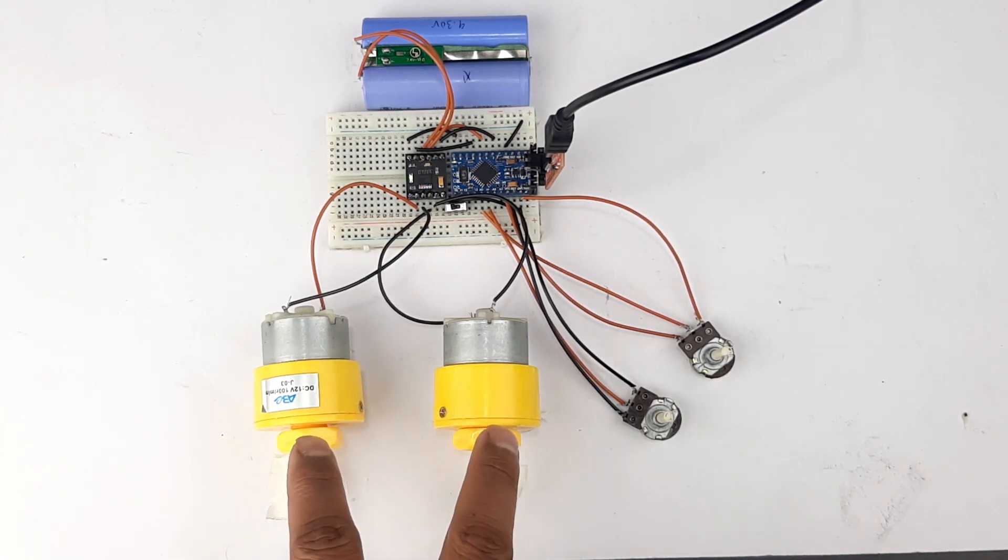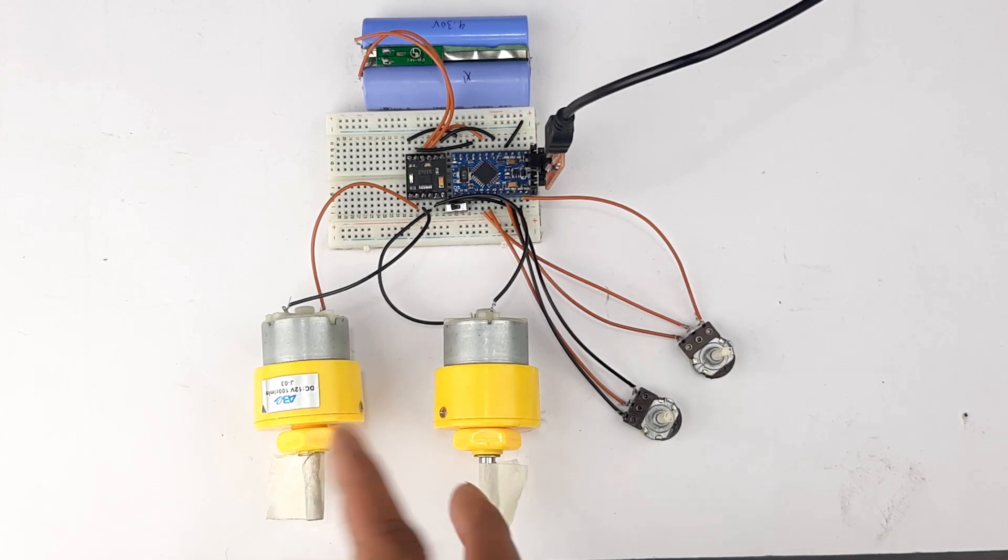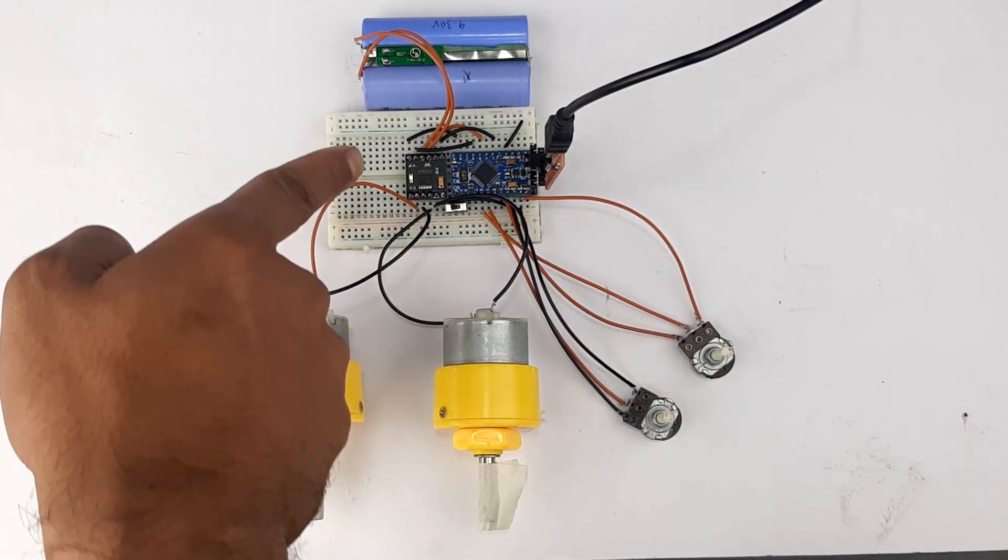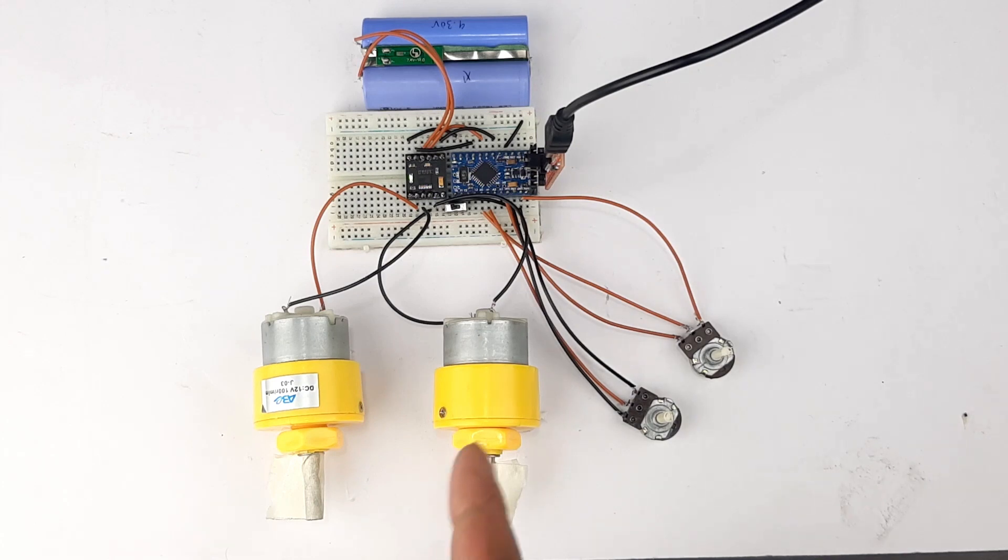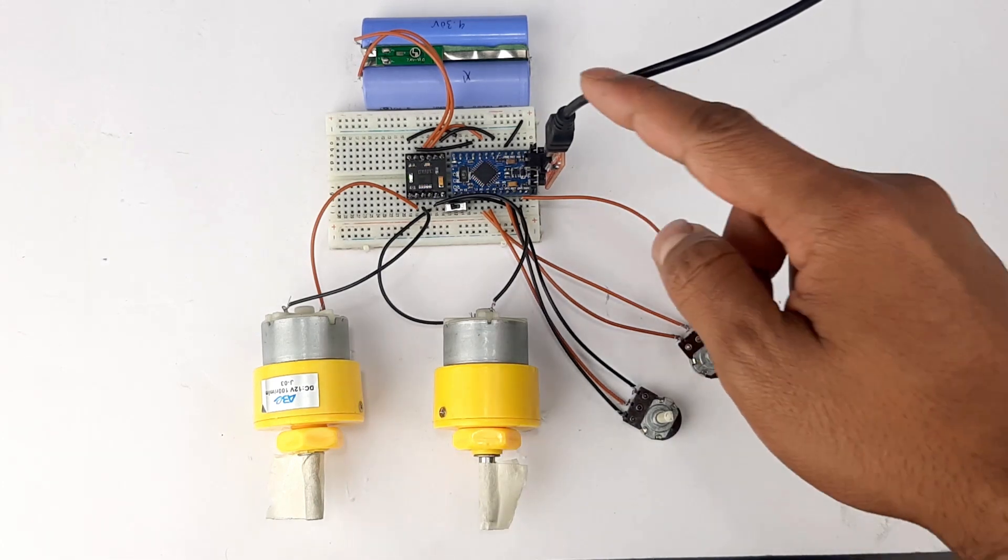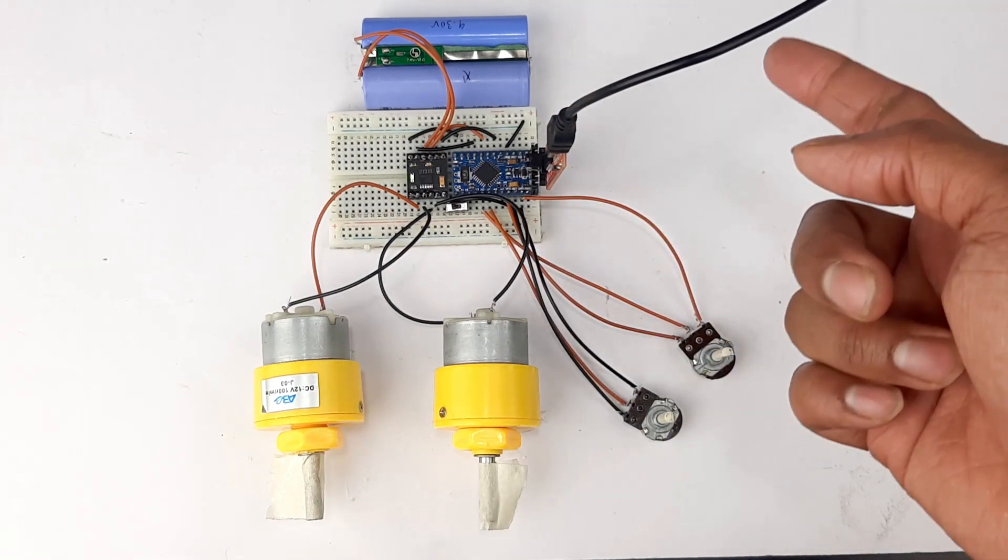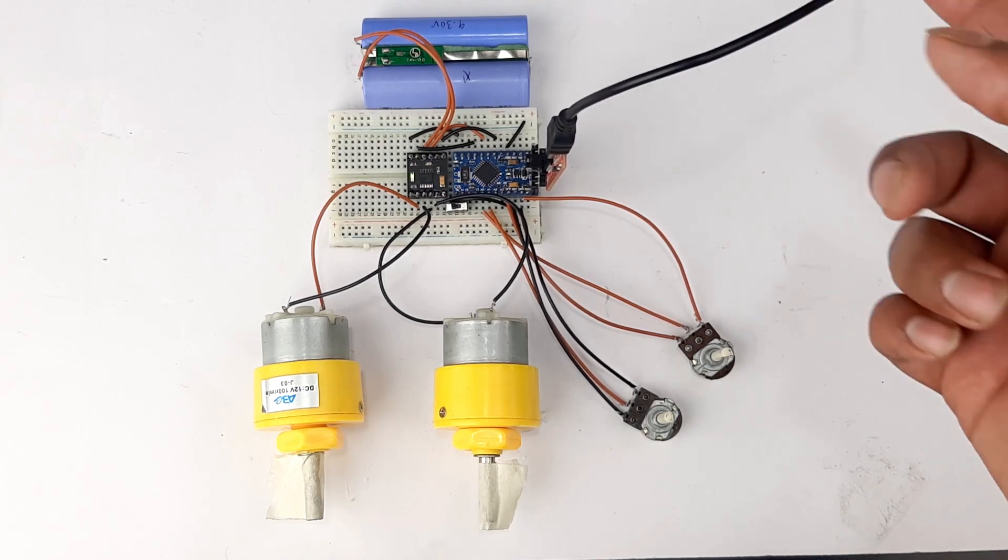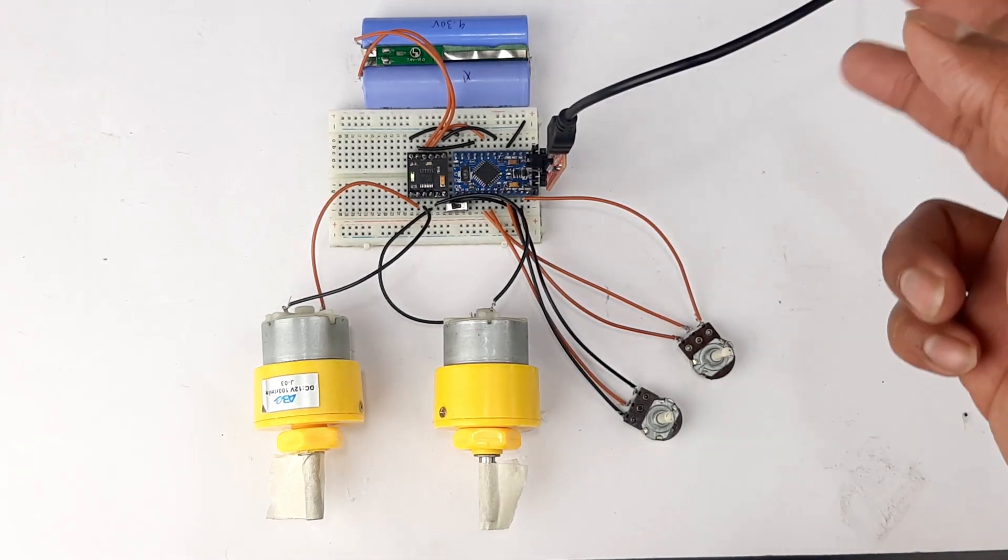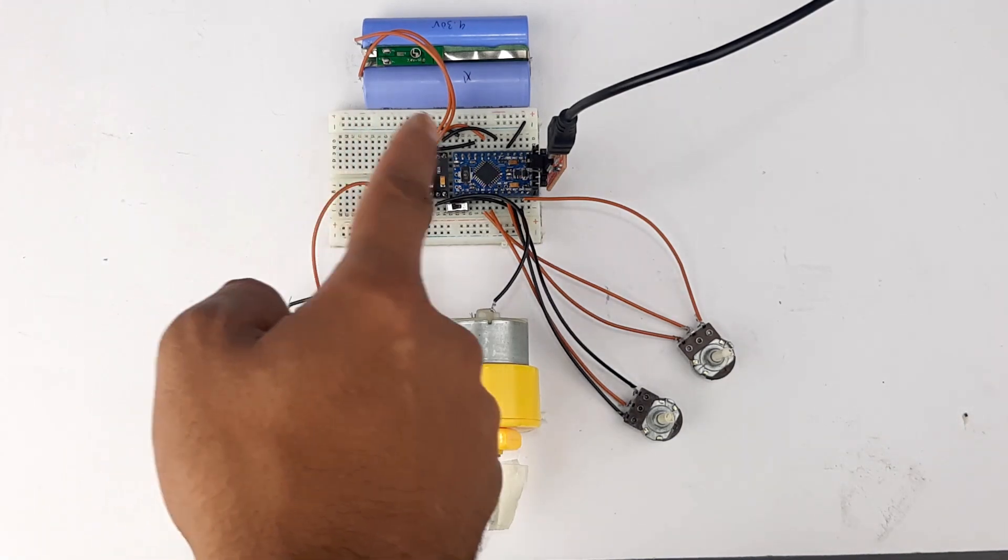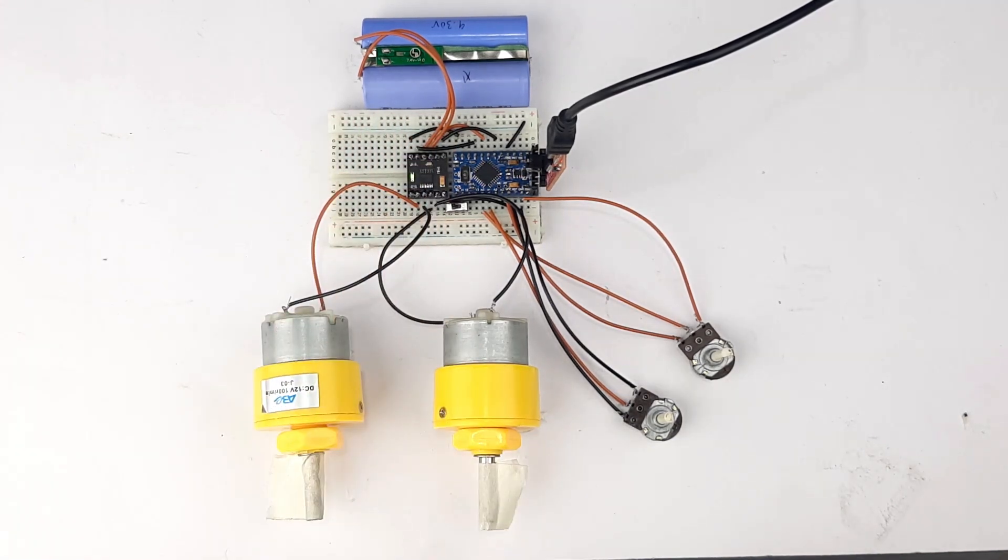So these are two motors we will be using. As you can see, this is the DRV8833 motor driver IC and the Arduino is there right here. To power the Arduino I am using a TTL converter. This is just for power, and to power the motors and motor driver we have that battery right there.